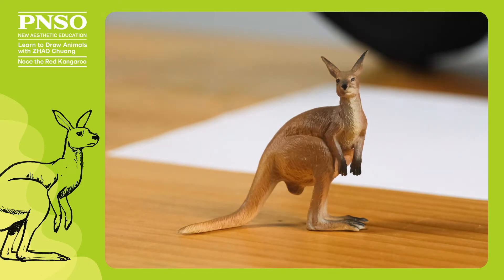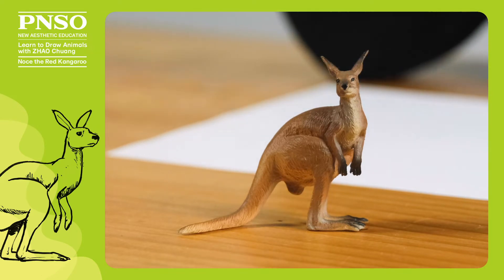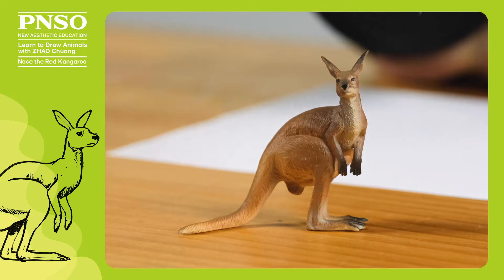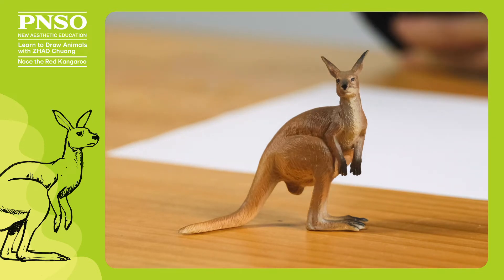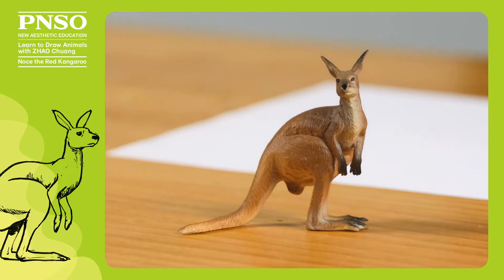When drawing the kangaroo, we must pay attention to some key points. One is that the face of kangaroos looks like that of a rat, but with a relatively square head. It has two big ears, which look a bit like those of rabbits.